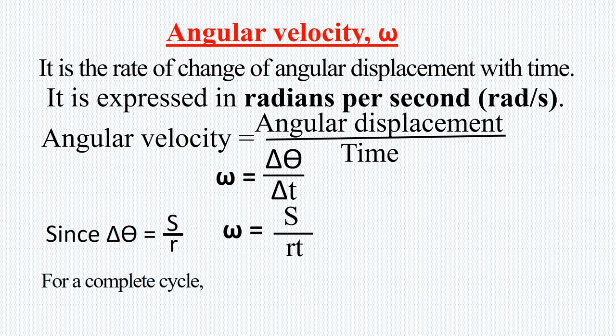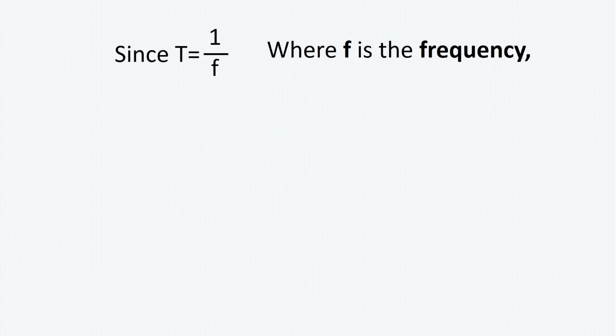For a complete cycle, angular velocity equals 2π over capital T. Capital T is the period time or periodic time. Since the periodic time equals 1 over the frequency, or 1 over f, omega can be expressed as 2πf.